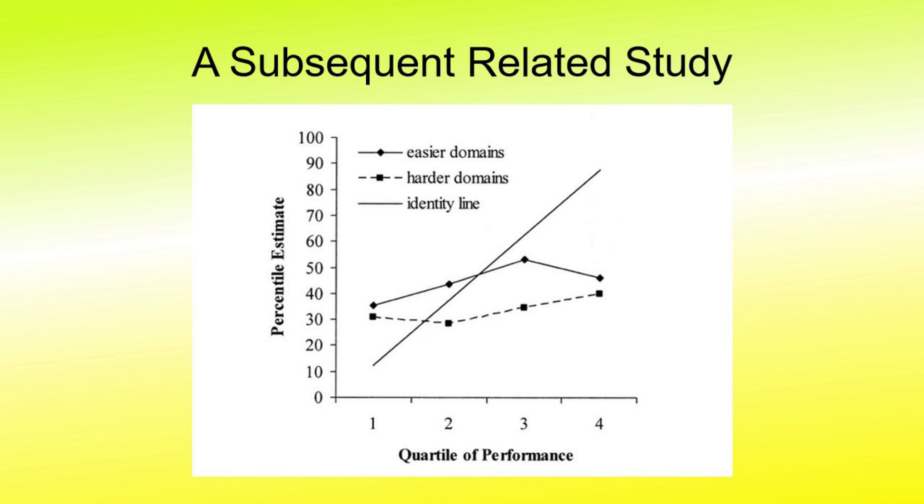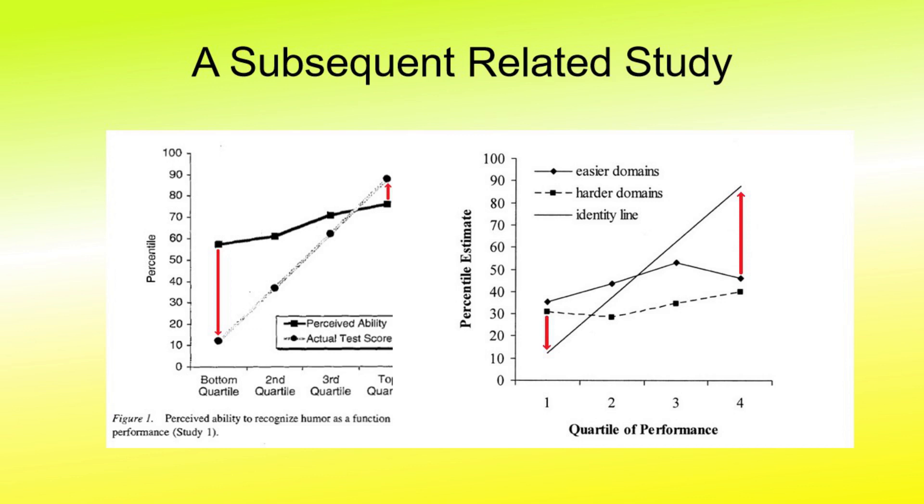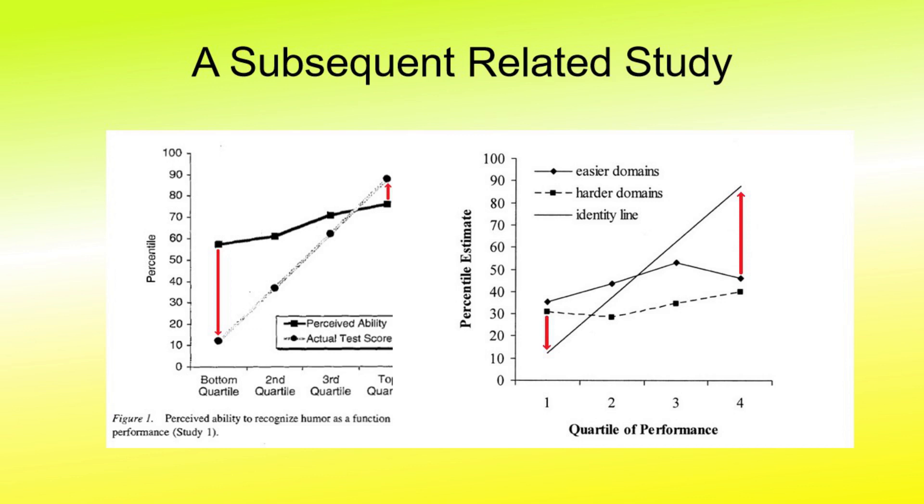Here is one of the graphs from this study. It shows the easier domain on top and the harder domain below. Now let's compare this side-by-side with the first Dunning-Kruger chart. Note the difference. It is not only clear that they are not the same, but they are even opposite, with the Dunning-Kruger one having the huge gap on the lower end, where the one from the other study has the larger gap on the higher end. Do I really need to pursue this any further?